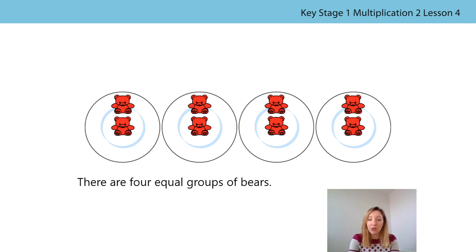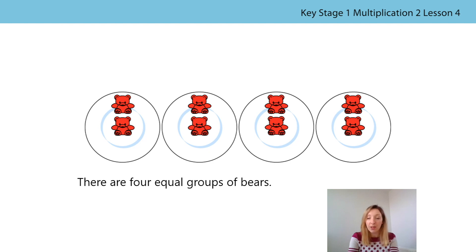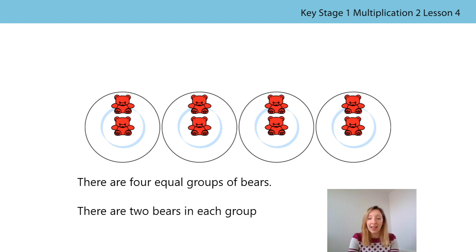How many bears are in each group? Let's look at this first one. There are two bears in each group. Do I need to count the rest of the groups? I don't, because I can see that there's two here. There's two in each of the groups because we know that the groups are equal, so there's the same number of bears in each group. There are two bears in each group. Can you say that with me? There are two bears in each group. Fantastic.